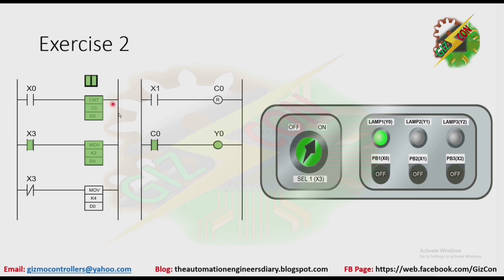After the count of two, the normally open contact of C0 here will be closed, and that will make Y0 to turn on. Now let's press PB2. When we press PB2, X1 will be energized — that will make Counter 0 to reset. Because of that, the normally open contact of C0 here will go back to its initial state, and that will make Y0 to turn off.